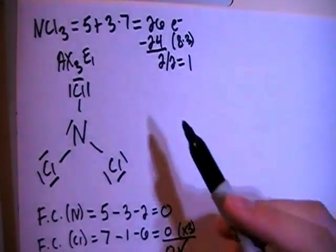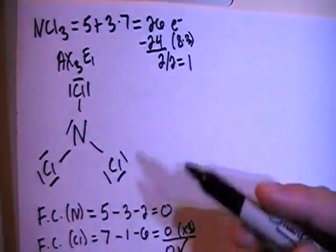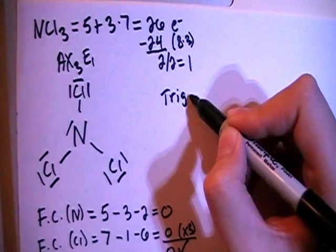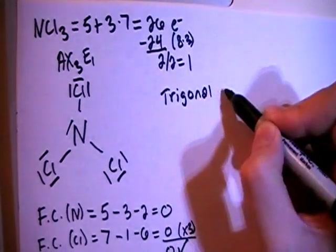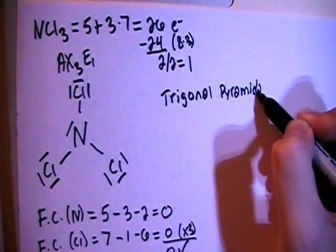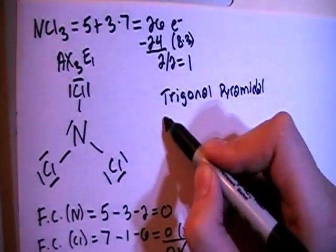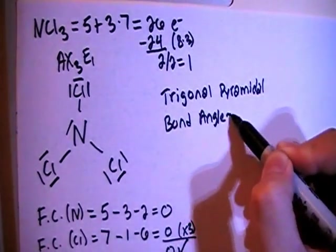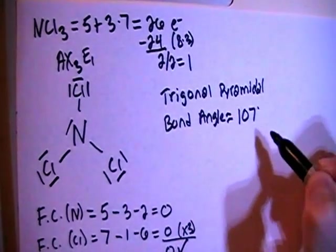In terms of actual shape, when you have AX3E1 type structure, that means that the shape is going to be called trigonal pyramidal. And when you have that kind of shape, the bond angles are approximately going to be equal to 107 degrees.